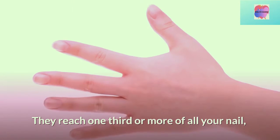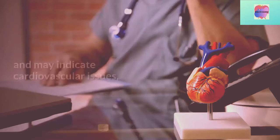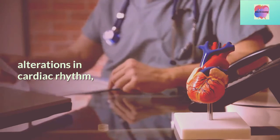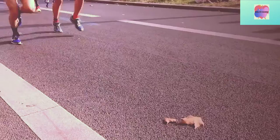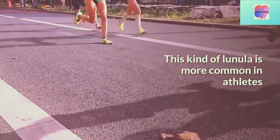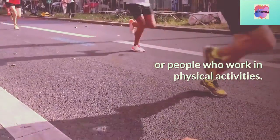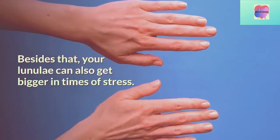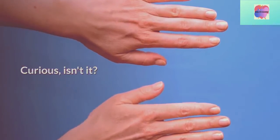Big lunula. They reach one-third or more of all your nail and may indicate cardiovascular issues, alterations in cardiac rhythm, and low blood pressure. This kind of lunula is more common in athletes or people who work in physical activities. Besides that, your lunula can also get bigger in times of stress. Curious, isn't it?